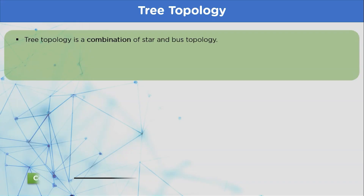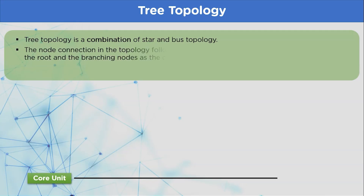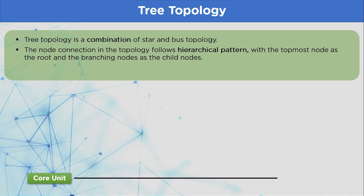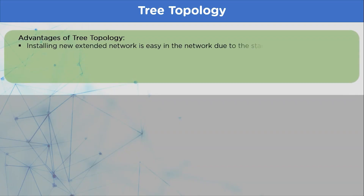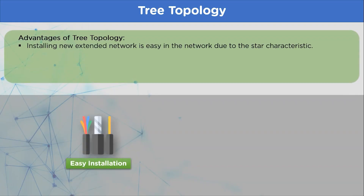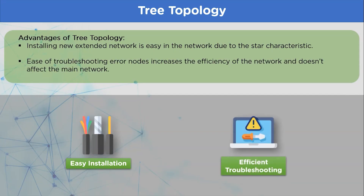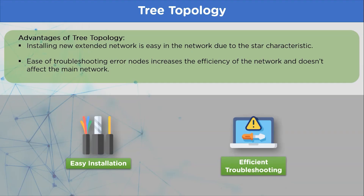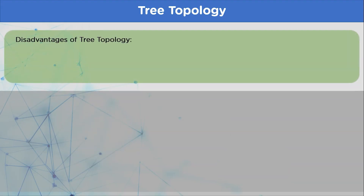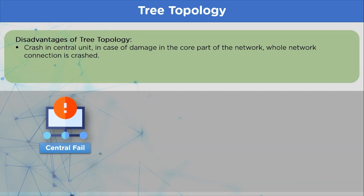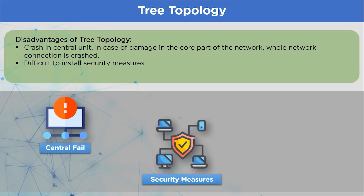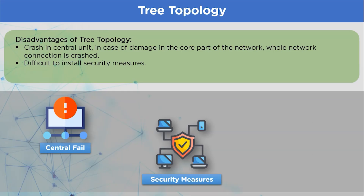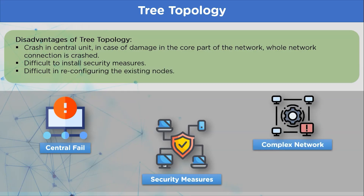Tree topology is a combination of star and bus topology. Node connections follow a hierarchical pattern with the topmost node as the root and branching nodes as child nodes, and data is shared from root node to child node. Advantages: installation of a new network group is easy due to the root-child configuration, and in case of a node fault, the whole network is not affected, making troubleshooting easier. Disadvantages: if a server crashes in any of the star connection groups, the whole network is affected. Installing security points is difficult due to the complex topology setting, and configuring and troubleshooting internal issues is also complex.